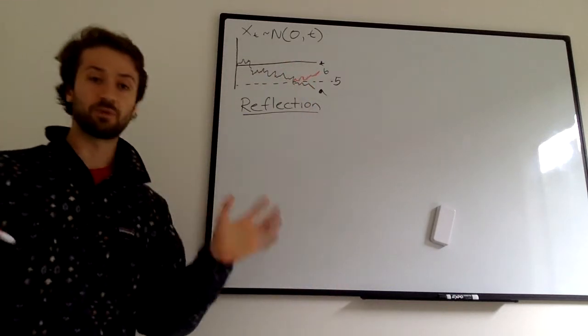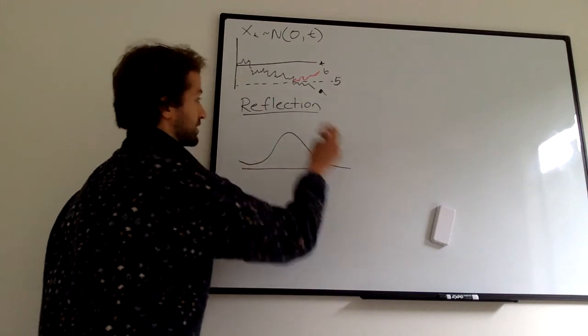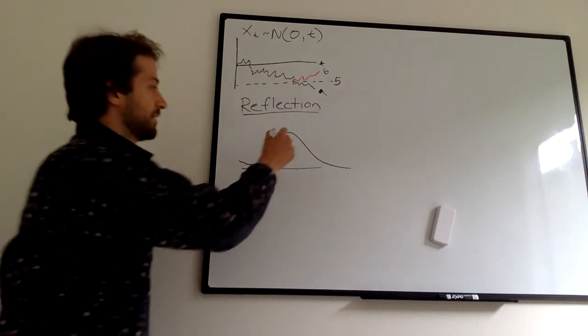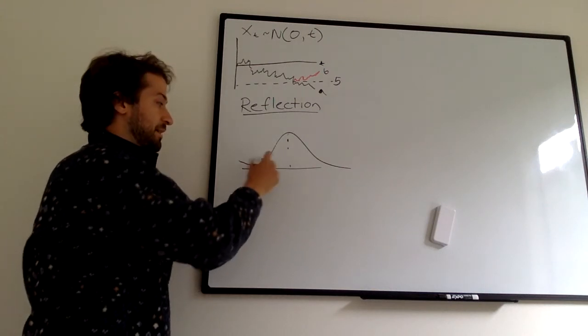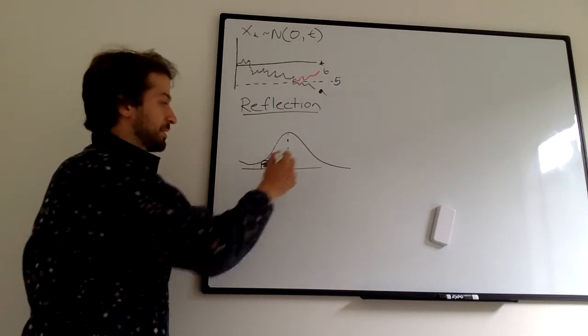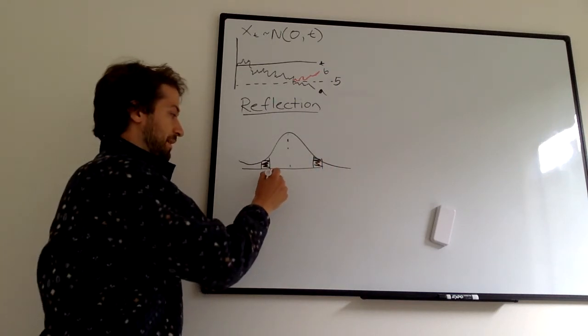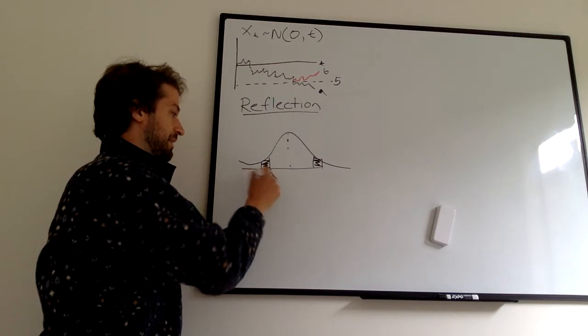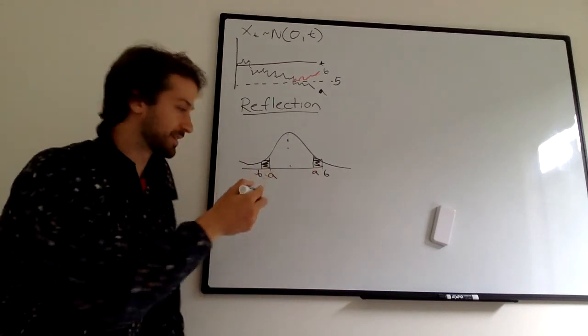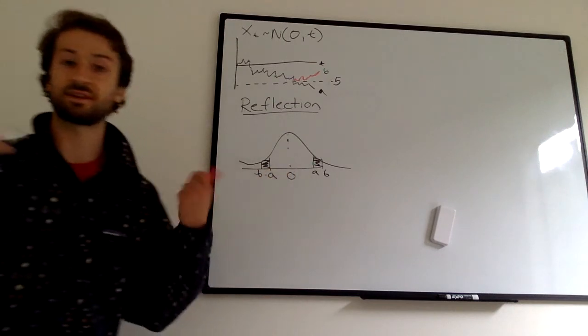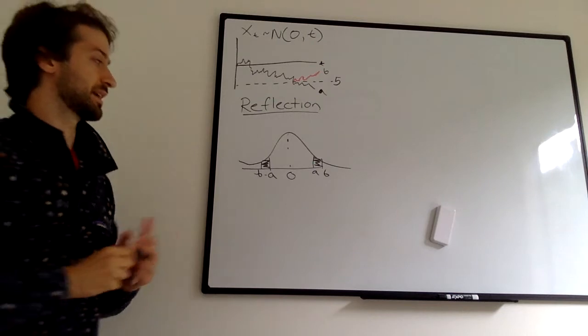It's the same in a normal distribution, which the Brownian motion is. The probability of being between these two values is the same as the probability of being between these two values. If this is negative A and negative B, and this is A and B, they're symmetric about zero for a normal distribution. That's what the Brownian motion is. And that's basically a simple proof for why this is the case.